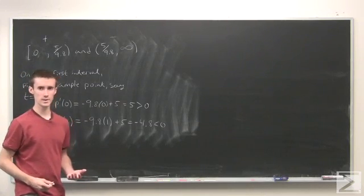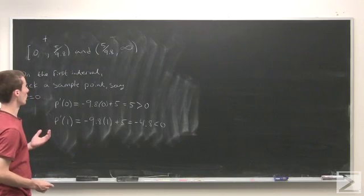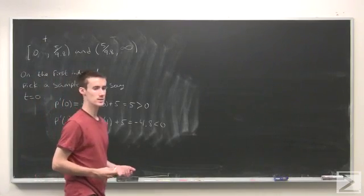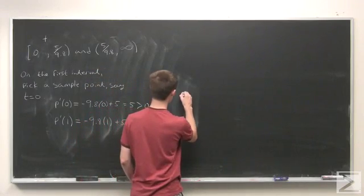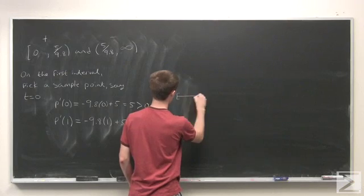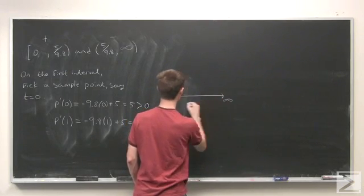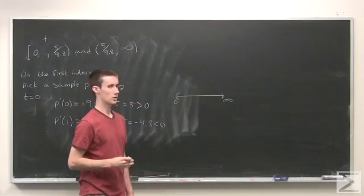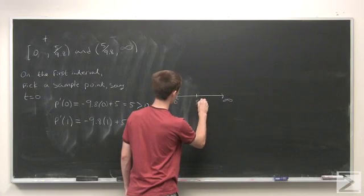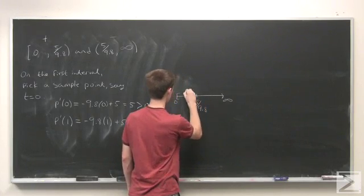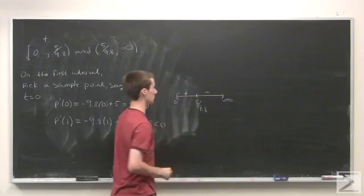Now part c asks us to find when does the stick attain its maximum height. Well, if we look on the points where the function is defined, we see that we go from positive to negative.